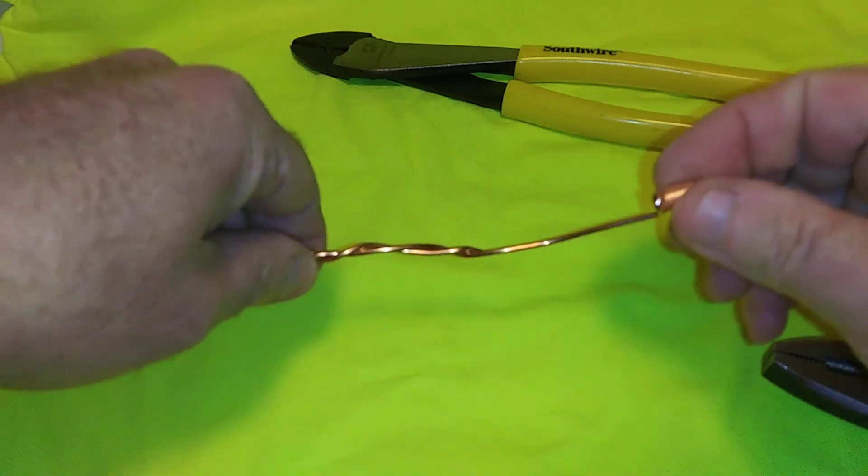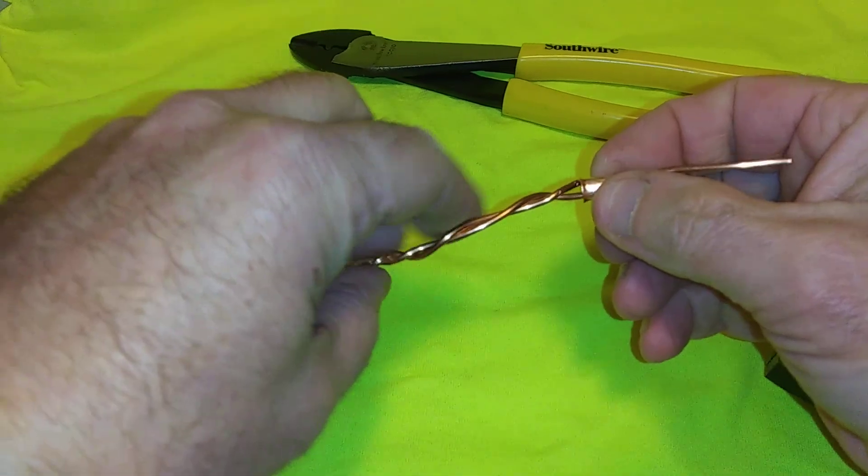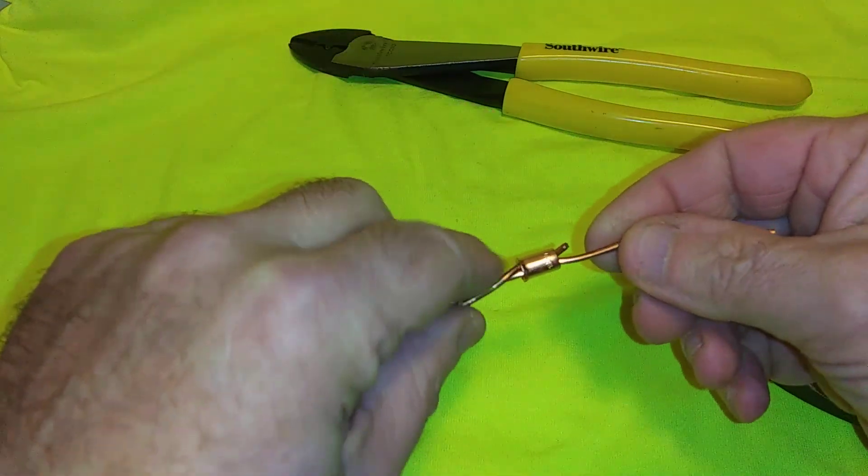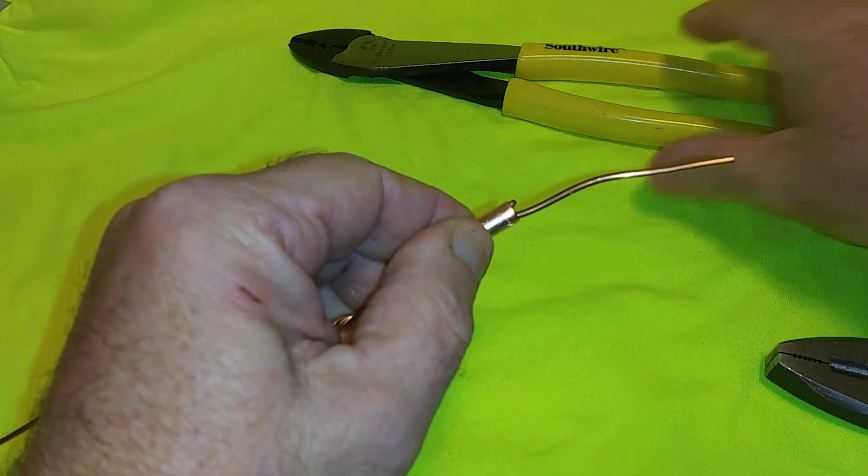You take the sleeve like this, you slide it down, and you get both wires in. And you just want to bring this second one up near the end.